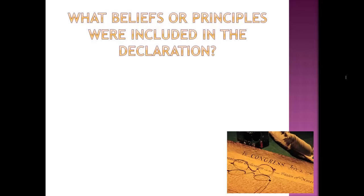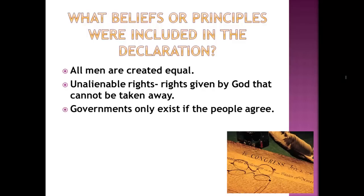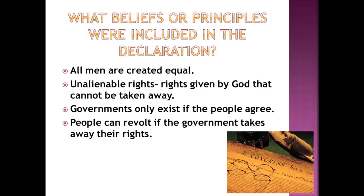When writing the Declaration, Jefferson called on the arguments of many Enlightenment philosophers like John Locke. Some of the principles included were the idea that all men are created equal, that all men have unalienable rights given to them by God that cannot be taken away by governments, and that government only exists if the people agree to be governed. Jefferson also introduced the belief that people had the right to rebel or revolt against a government that takes away their rights and to create a new government in its place.